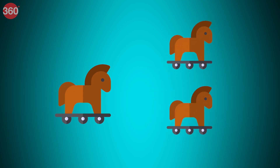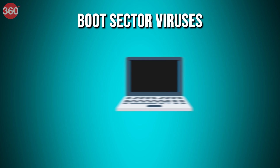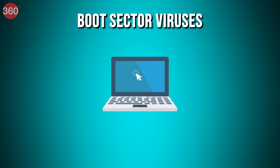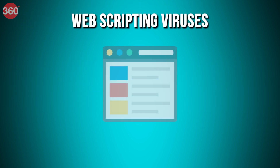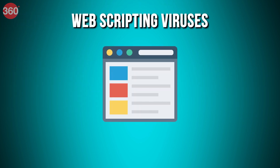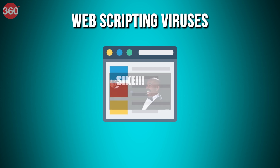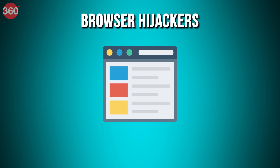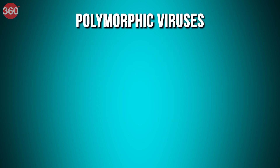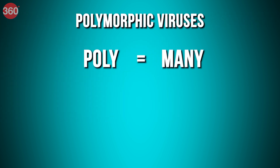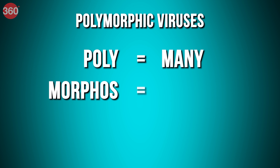Apart from Trojan horses, you also have boot sector viruses that can take control when you start or boot your computer — they are mostly spread through USB drives. You also have web scripting viruses that exploit the code of web browsers and web pages; if you access an infected web page, the virus can be downloaded on your PC. Then you have browser hijackers that hijack certain web browser functions and may automatically redirect you to an unintended website.